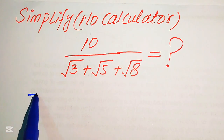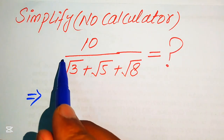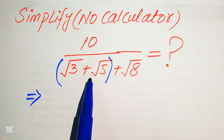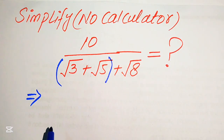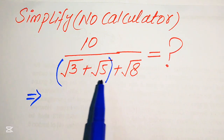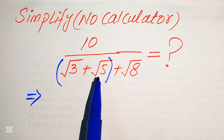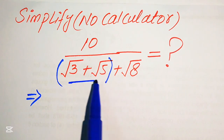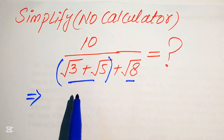The very first step is to make a pair of two terms. So this is our first term and this is the second term. According to the grouping of these terms, we will rationalize this term by changing the sign — multiplying and dividing by the conjugate.